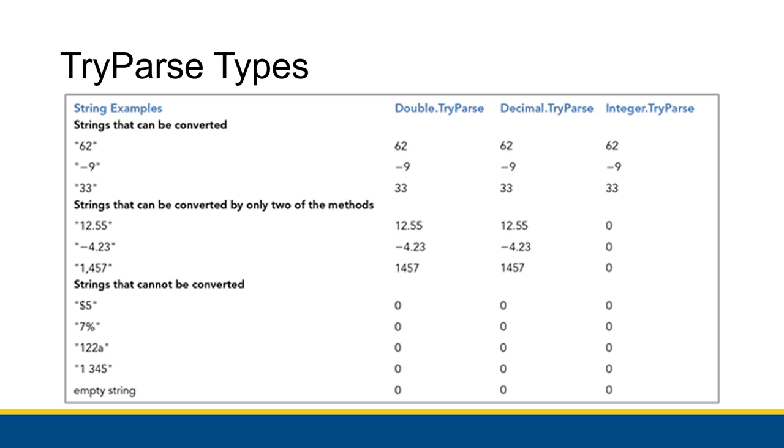And then there are strings that cannot be converted into any type. Anything with a dollar sign, dollar sign 5 is not considered a valid double or decimal or integer. A percent sign also disqualifies a number from being valid. So 7% would not be valid. Instead, you would want to do 0.07. Letters or spaces inside of the number are also not going to be good. And the empty string, two quotation marks next to each other, that is not going to be considered a valid double or decimal or integer. In any case where any of those values are not considered valid for a particular type, those all turn out to be 0.